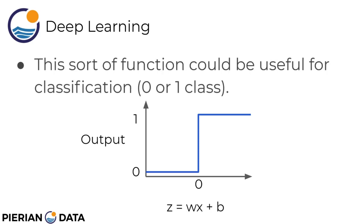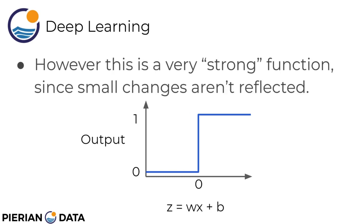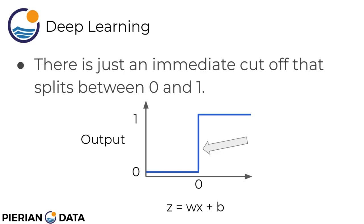Regardless of the values, what's nice about this is it's always going to output 0 or 1. This sort of function is really useful for classification. However, this is a very strong function since really small changes aren't reflected. There's just an immediate cutoff that splits between 0 and 1. If the total output of z happens to be less than 0 we define that as 0; if greater than 0 then when we pass it through this step function we kind of top it off at 1.